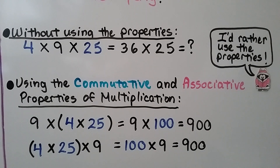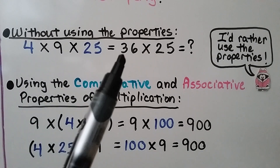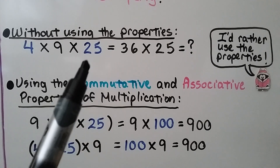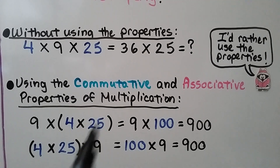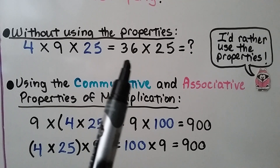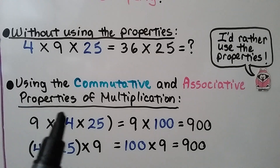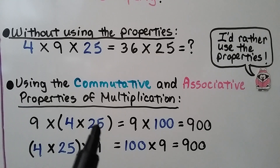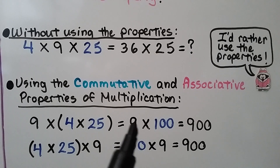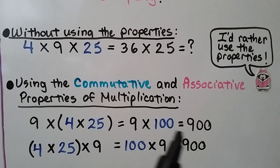Without using the properties, we might multiply 4 times 9, which is 36, and then have to multiply it by 25 — and I don't want to do 36 times 25 with mental math. Using the commutative and associative properties of multiplication, we can multiply 4 times 25, which equals 100, and multiply that times 9, which is equal to 900.